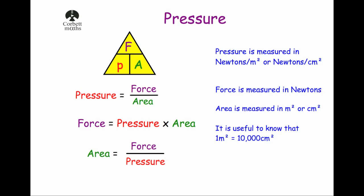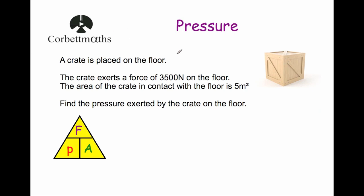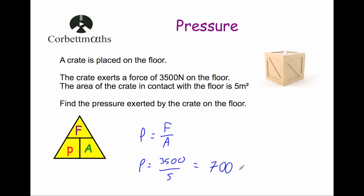Let's look at three exam questions. First: a crate is placed on the floor. The crate exerts a force of 3,500 newtons on the floor, and the area of the crate in contact with the floor is 5 meters squared. Find the pressure exerted by the crate on the floor. Pressure equals force divided by area, so pressure equals 3,500 divided by 5, which gives us 700 newtons per meter squared.